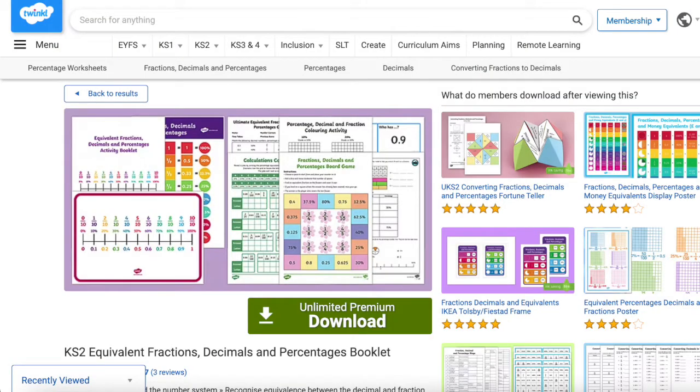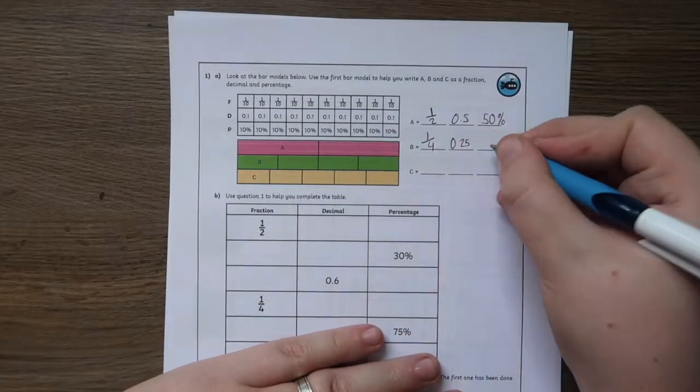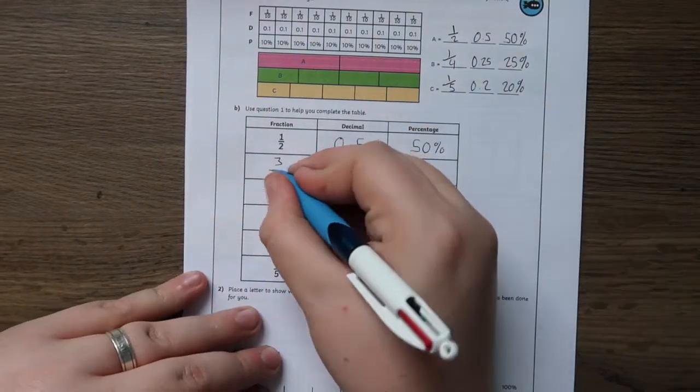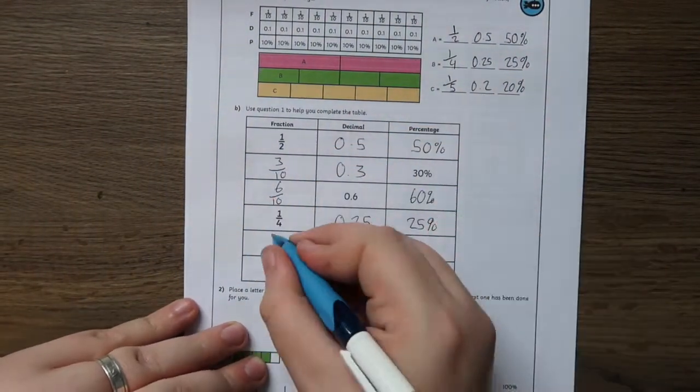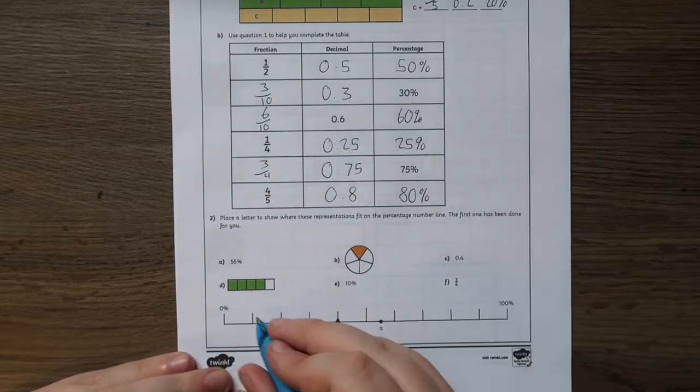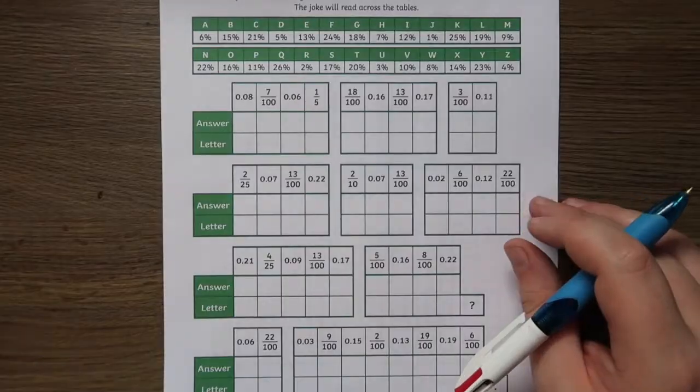This fantastic pack of equivalent fractions, decimals and percentages activities are perfect for consolidating your children's learning in this tricky maths topic. The pack is suitable for children ages 9 to 11 and ensures that children can continue with purposeful learning independently with helpful posters and guidance in the pack.